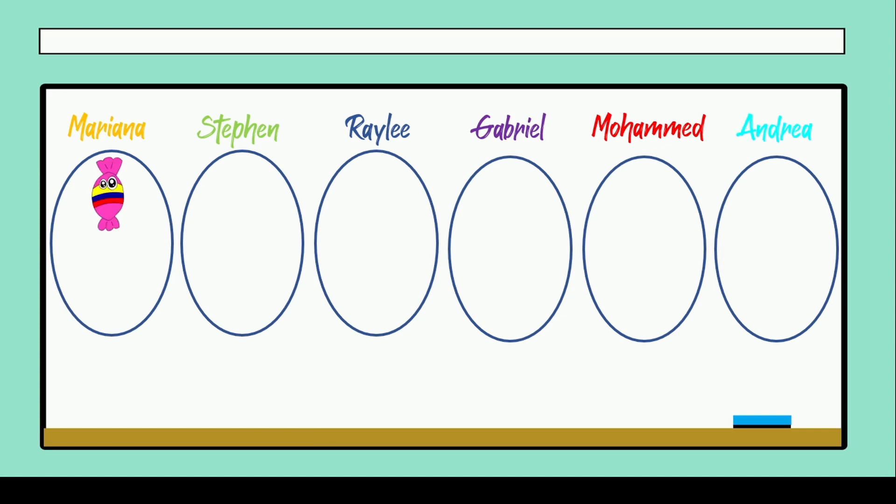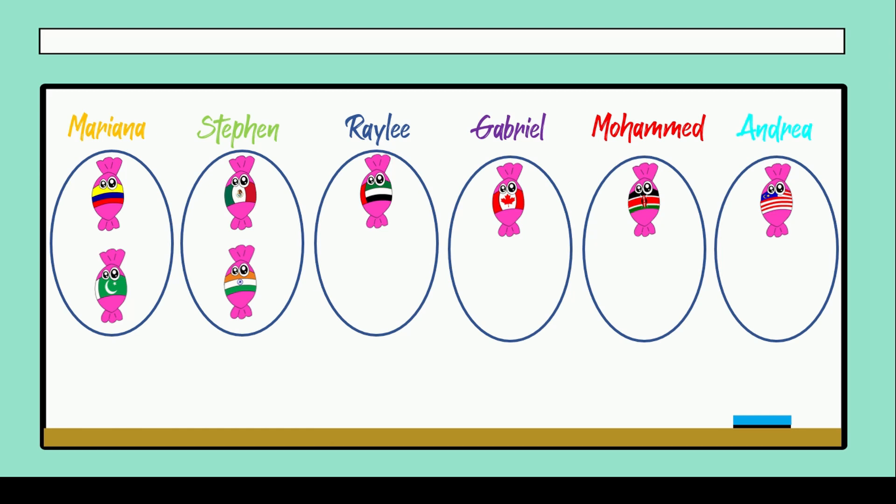One for the first... another candy. I don't know if I have enough candies, so I have to continue. One, two, three, four, five and six. So how many candies does each student have?